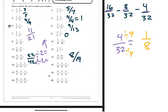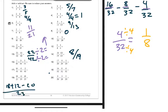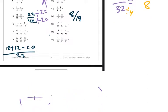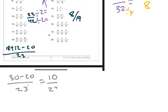Number nineteen: eighteen plus twelve minus twenty, all over twenty-three. Eighteen plus twelve is thirty, minus twenty over twenty-three, which is ten over twenty-three. Twenty-three is prime, so as long as ten is less than twenty-three, there's no need to reduce any further.